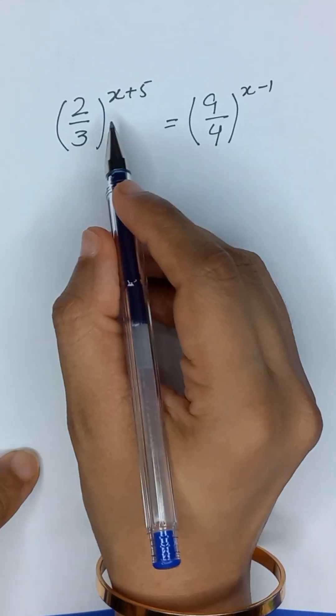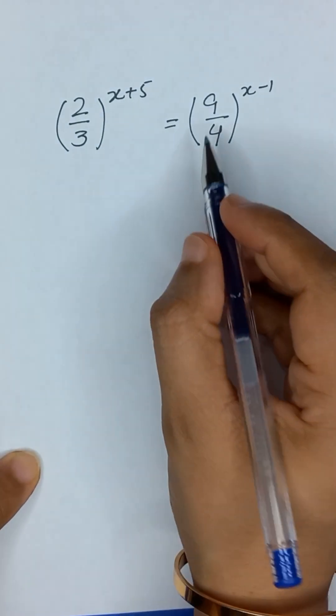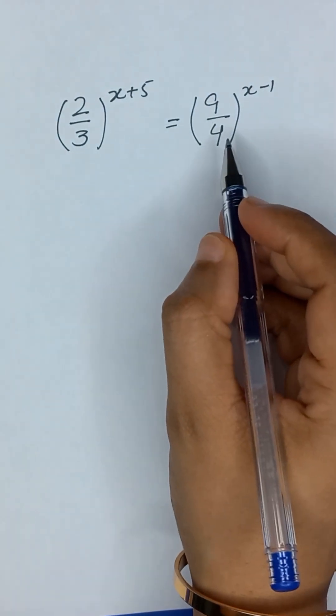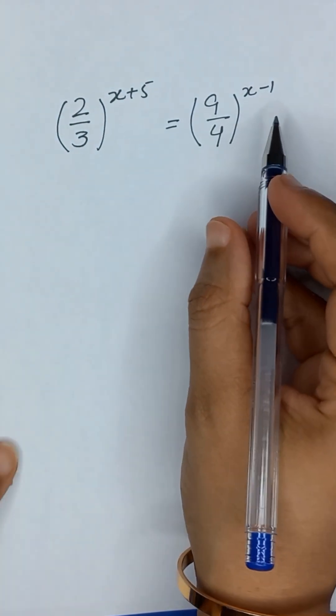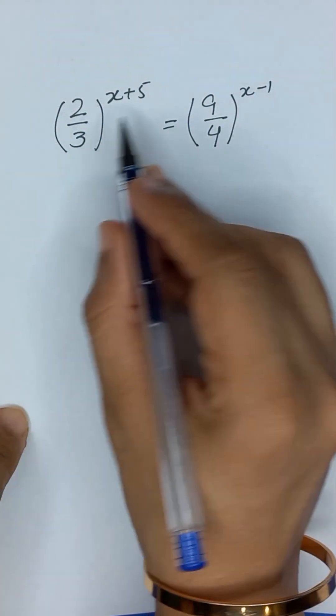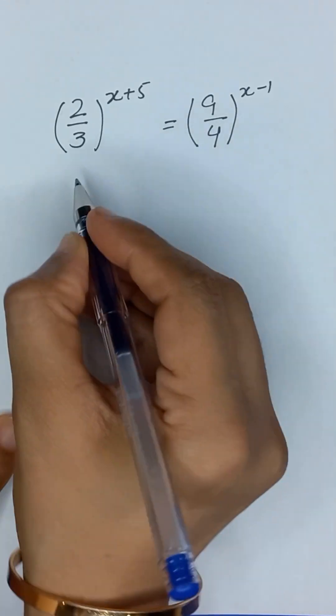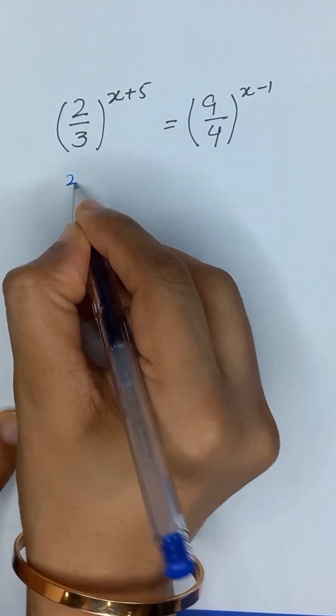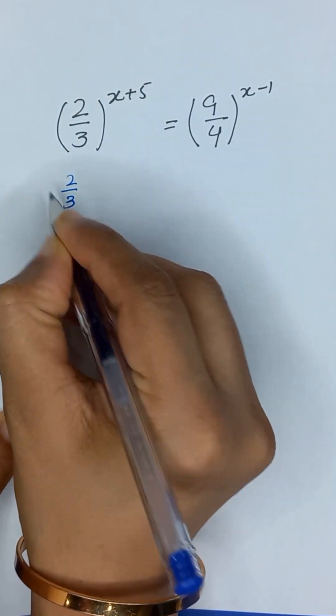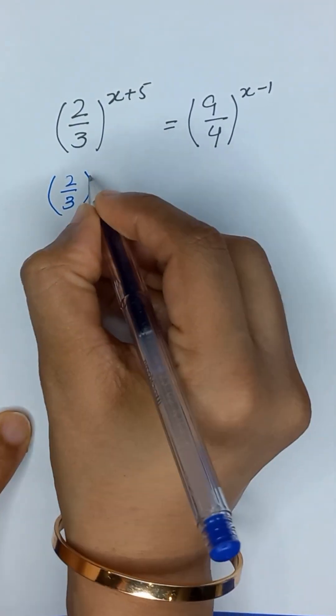2 divided by 3 to the power x plus 5 is equal to 9 divided by 4 to the power x minus 1, and we have to find the value of x.